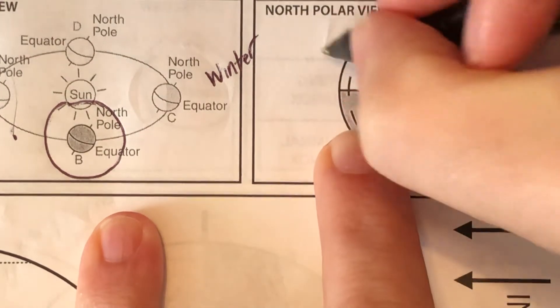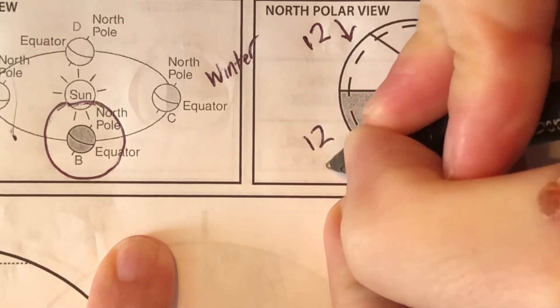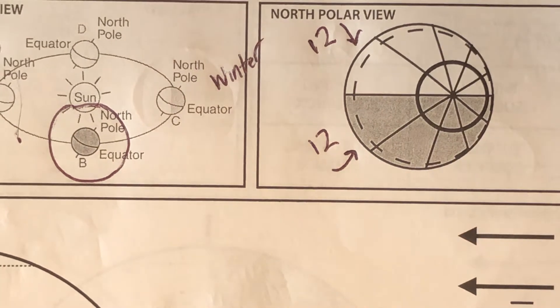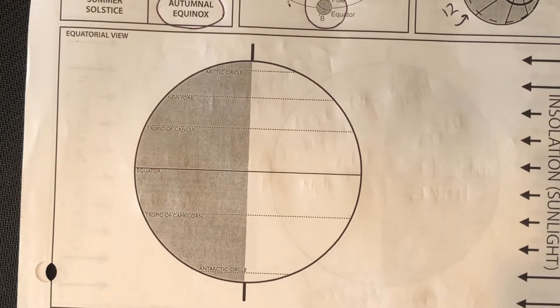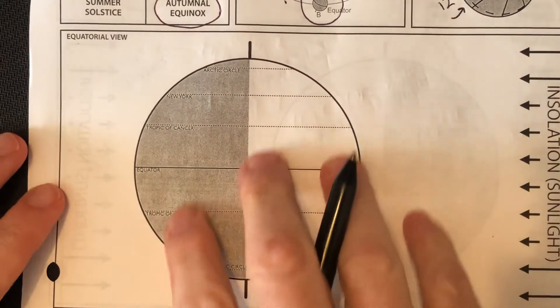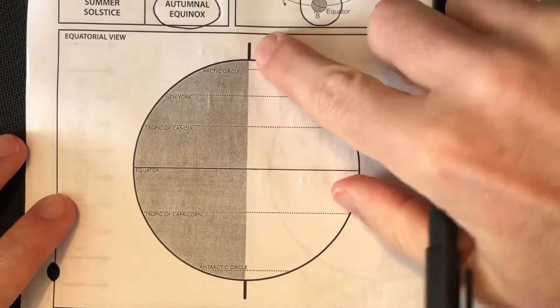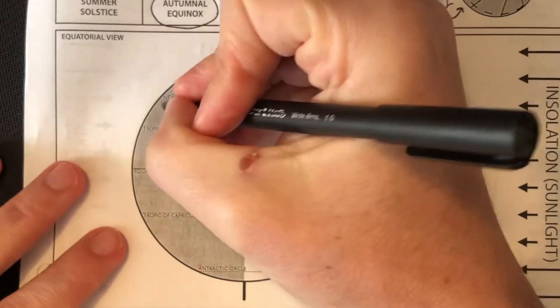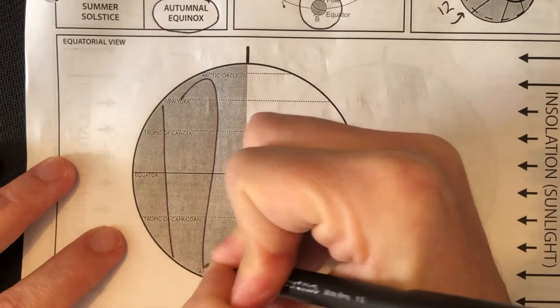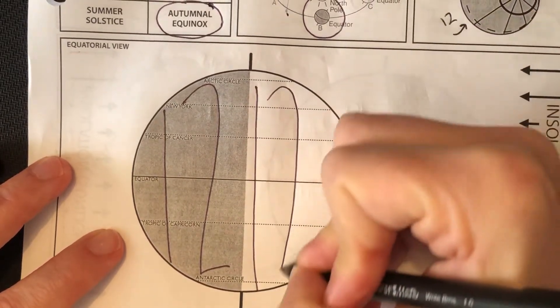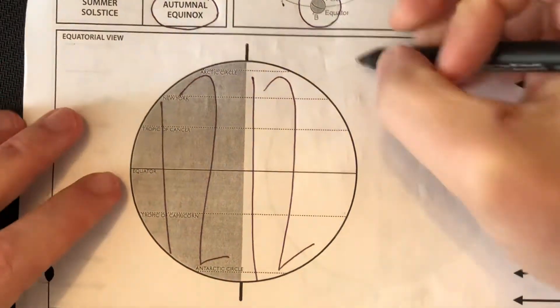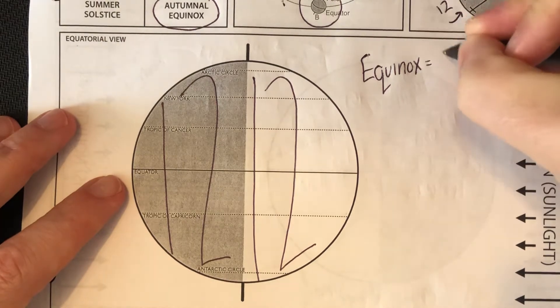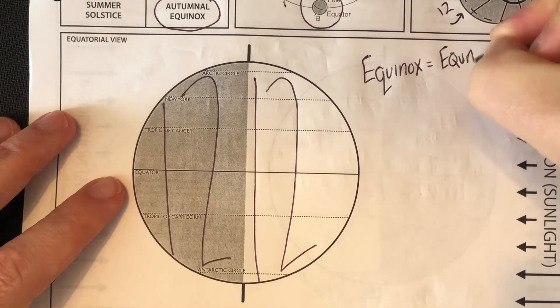I know that this is going to be an equinox because you have 12 hours of daylight and 12 hours of darkness. It's split exactly equal, 50-50. If I go to the equatorial perspective, I know that this is going to be an equinox because the sun coming in from the right side, the Terminator splits right down through the axial tilt from the North Pole to the South Pole. So you get exactly 12 hours of daylight and 12 hours of darkness across the entire planet. 12 and 12. Equinox means equal. It's equal day and equal night.